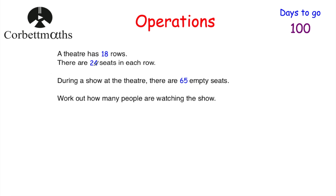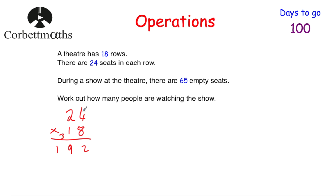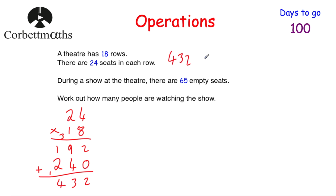The theater has 18 rows and 24 seats in each row, so we need 18 times 24 to find the total seats. Let's do 24 multiplied by 18: first 24 times 8 — 8 times 4 is 32, put 2 down carry 3; 8 times 2 is 16 plus 3 is 19 — giving 192. Then 24 times 10: put a 0 down, 1 times 4 is 4, 1 times 2 is 2, giving 240. Adding 192 and 240: 2, then 9+4=13 put 3 carry 1, then 1+2+1=4. So there are 432 seats altogether.